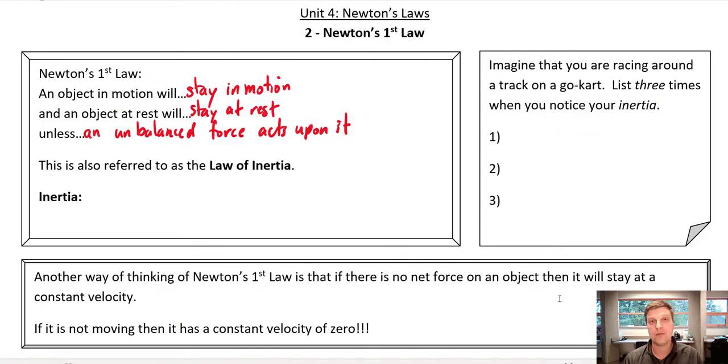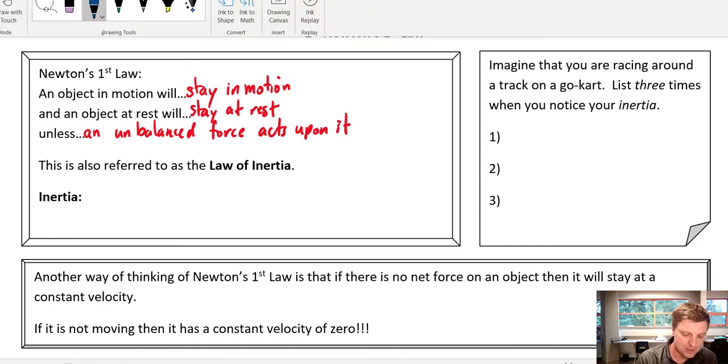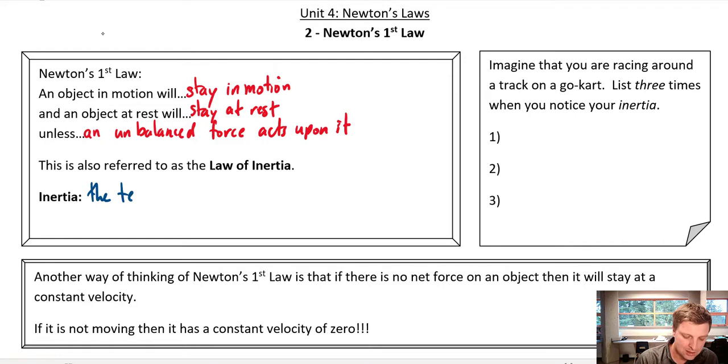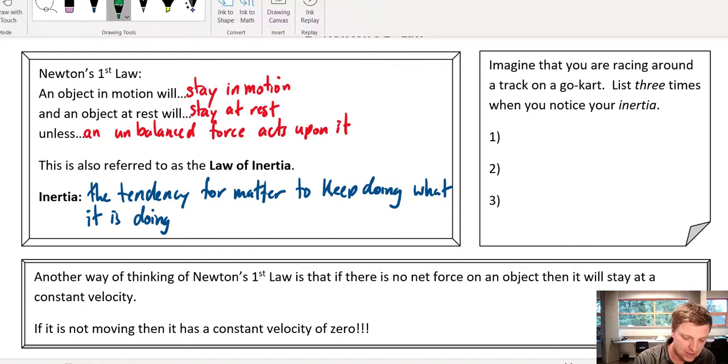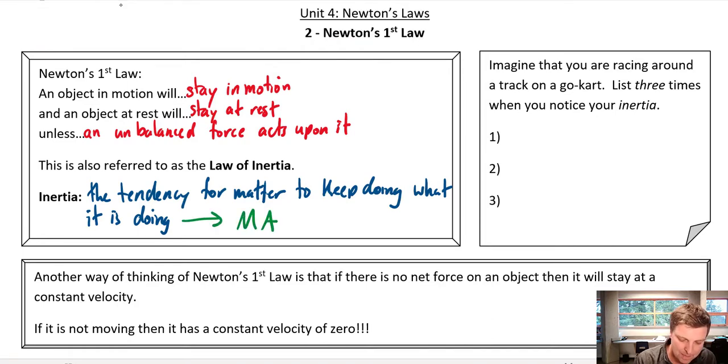So this is often referred to as the law of inertia. And inertia, the inertia of an object is basically just the tendency for matter to keep doing what it's doing. By that I mean if something is not moving, the amount of inertia it has will tell you how hard it's going to be to start it moving. And if it is moving, the amount of inertia it has will tell you how hard it is to stop it from moving. Really, if you think about it, the amount of inertia that an object has really tells you about the mass of that object.